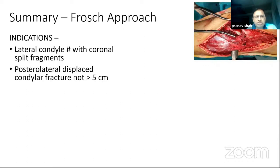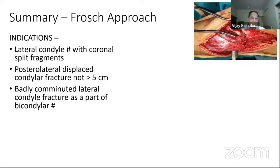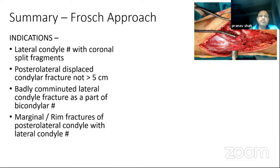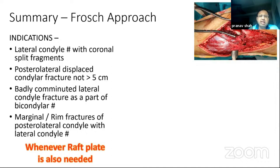To summarize the Frosch approach indications: lateral condyle fractures with coronal split fragments or a posterolaterally displaced condylar fragment not more than five centimeters — beyond that the posterolateral window cannot adequately expose it. It is also useful for badly comminuted lateral condyle fractures as part of a bicondylar fracture, and for marginal or rim fractures of the posterolateral condyle that need to be addressed along with the anterior part. In short, whenever the lateral condyle requires a raft plate but also needs some posterolateral work, use the Frosch approach.